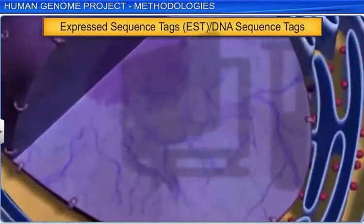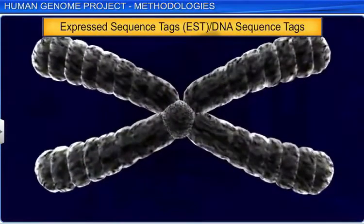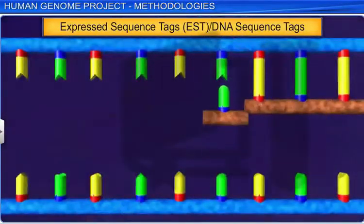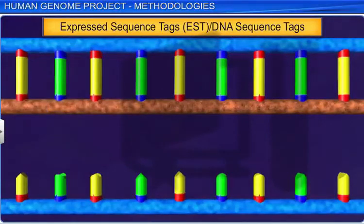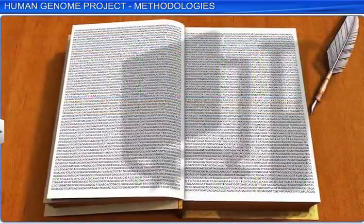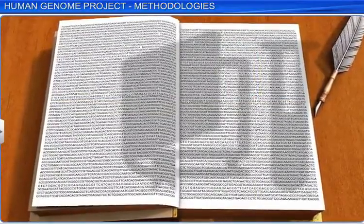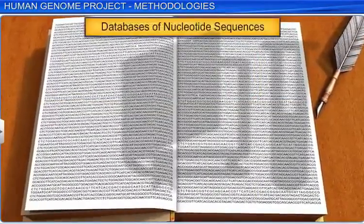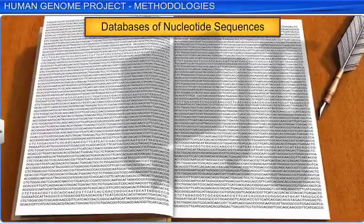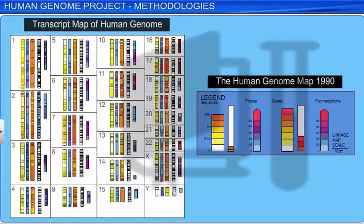In the EST or DNA sequence tag method, the focus was on identifying and isolating all genes that expressed as RNA. EST is the term for all genes that express as RNA. With EST, numerous databases of nucleotide sequences have been made available, facilitating the construction of the preliminary transcript map of the human genome.